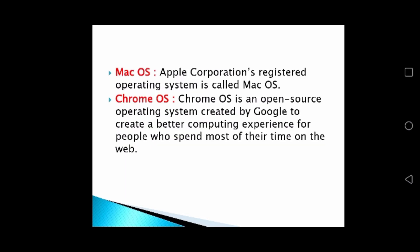The next operating system is Mac OS — Macintosh operating system — which is used in Apple's devices. Next is Chrome OS. Chrome OS is an open source operating system created by Google to provide a better computing experience for people who spend most of their time on the web. Chrome OS is freely available; we don't need to pay for it. As open source software, we can change, modify, and distribute its source code.